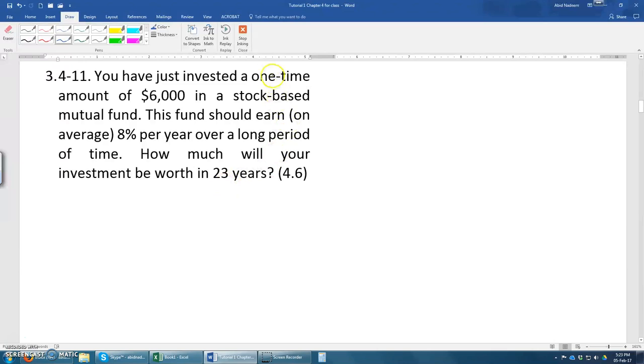So you can see that this is a one-time amount of $6,000 investment. So this is P = $6,000 and interest rate is 8% per year.